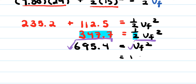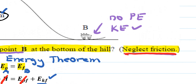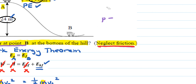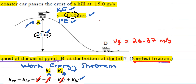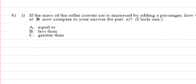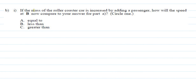Taking the square root, the final speed at position B is 26.37 meters per second. The speed has increased from position A because the coaster is going faster as it descends the hill. The follow-up question asks: if the mass of the roller coaster is increased by adding a passenger, how will the speed at point B compare?